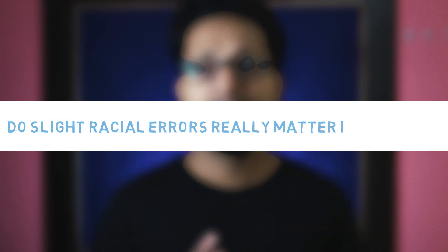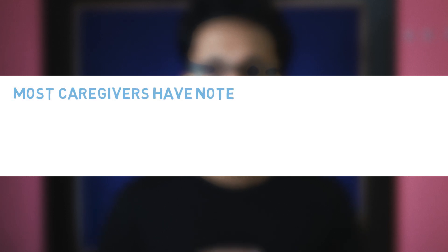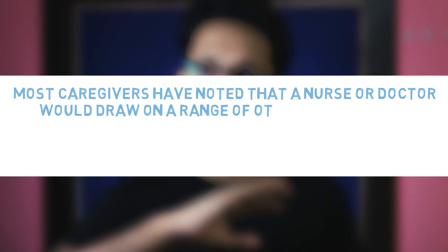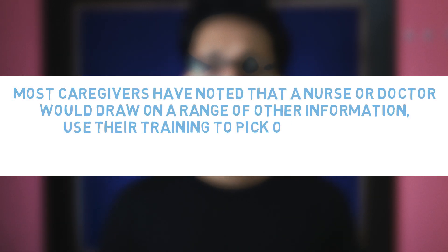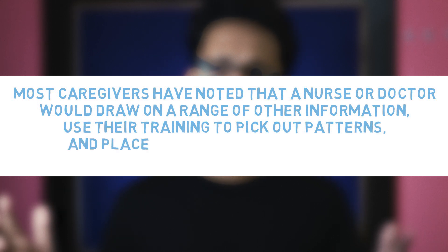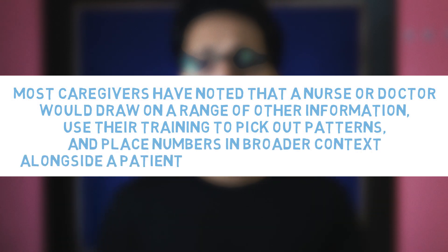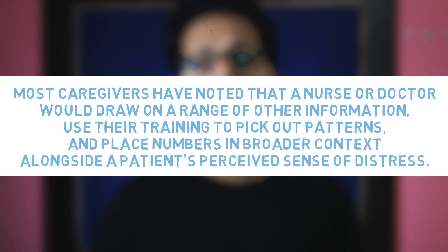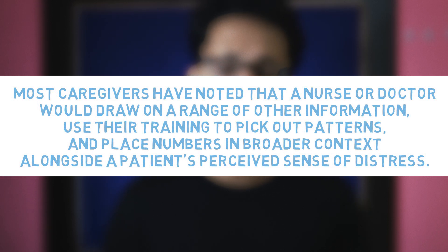Physicians disagree on the clinical significance of these discrepancies. Do slight racial errors really matter in fair practice? Like any vital sign, pulse oximeter readings are one among many factors considered when making a critical care decision. Most caregivers have noted that a nurse or doctor would draw on a full range of other information, use their training, pick out patterns, and place numbers in a broader context alongside a patient's perceived sense of distress.